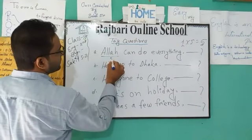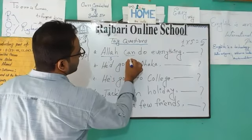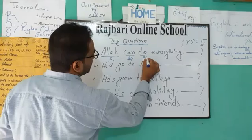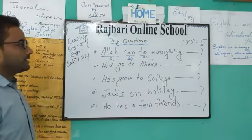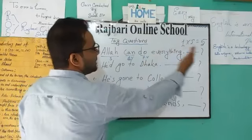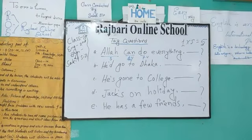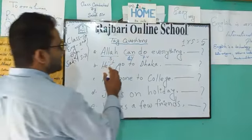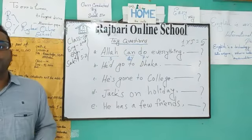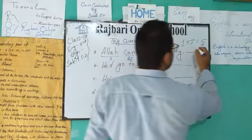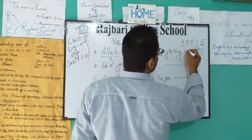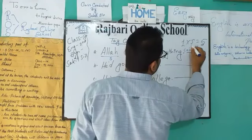In the first sentence, 'Allah can do everything.' Allah is the subject. 'Can' is the auxiliary verb, and after that comes the principal verb. The subject is Allah, and we should write the pronoun of the subject. What is the pronoun of Allah? The pronoun of Allah is 'He.' So the tag is: Can't He.